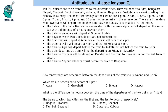Welcome to aptitude. This set says there are 10 IAS officers who have to be transferred to 10 different cities. The names of the cities are given and they are transferred using different trains. The departure timings of their trains are 1 PM, 2 PM, and so on until 10 PM, not necessarily in the same order. The trains will go from Monday to Sunday.